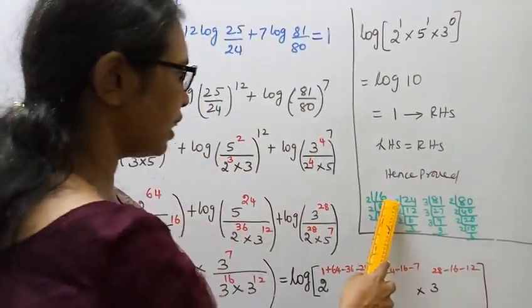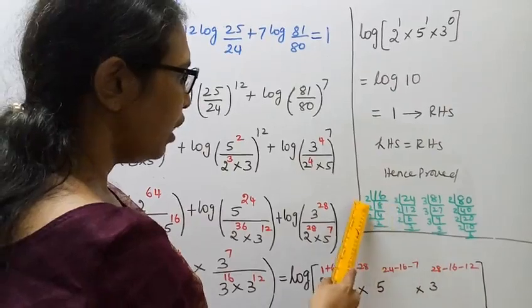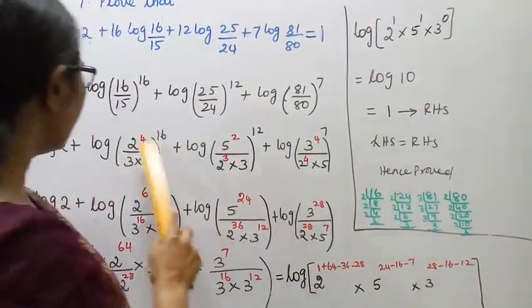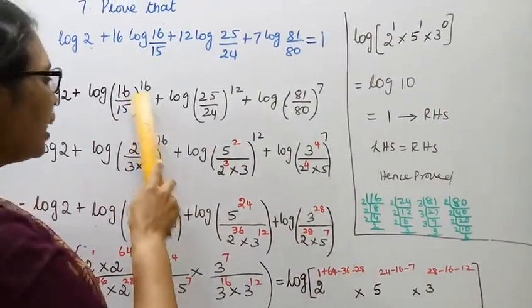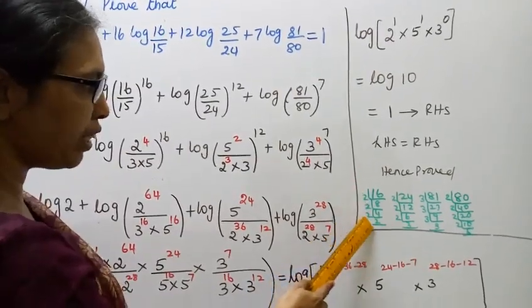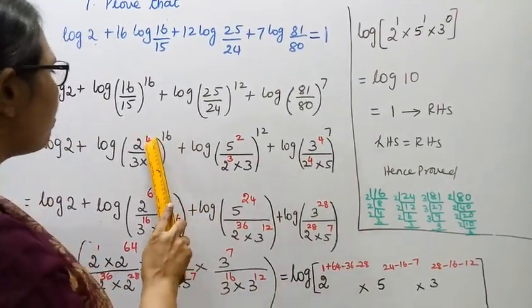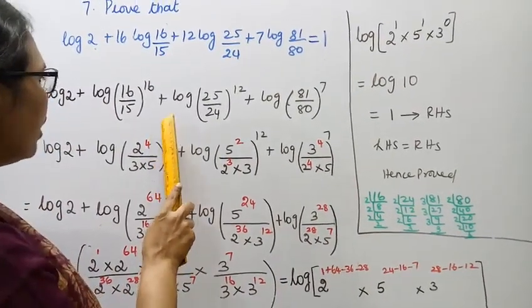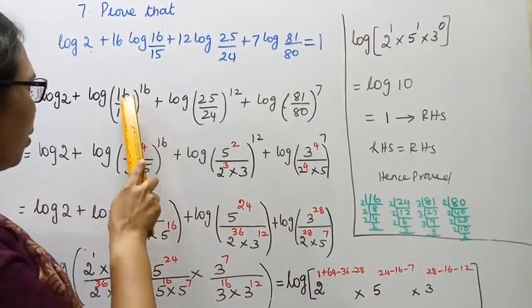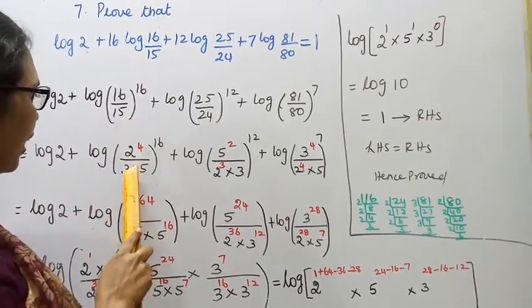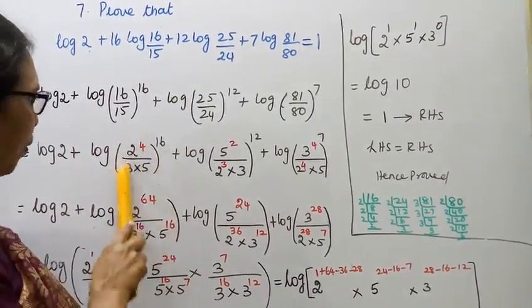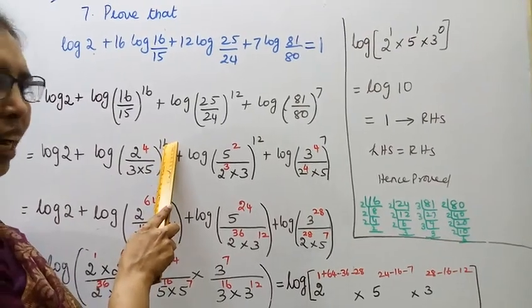16 is 2 into 2 into 2 into 2, so 16 is 2 power 4. Therefore (16/15) = (2 power 4) / (3 into 5), the whole power 16.